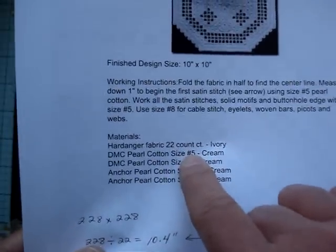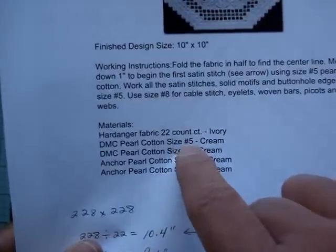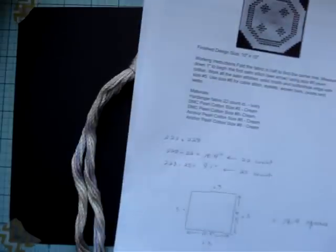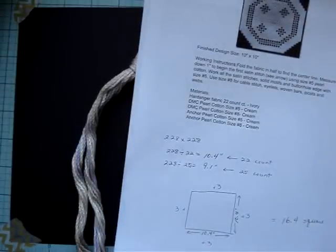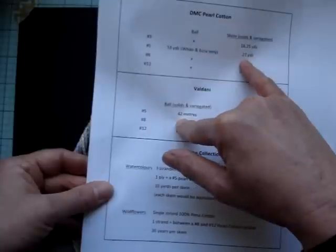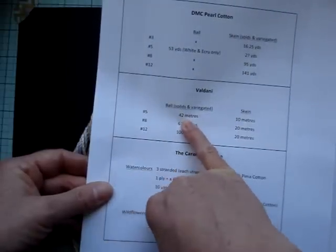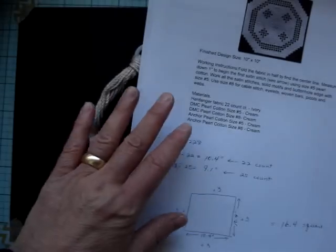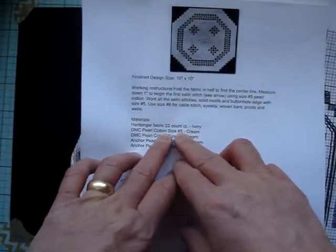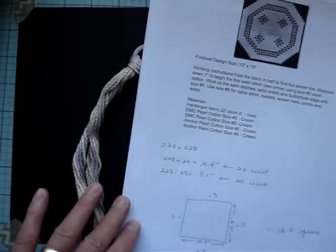If you're ordering, get a minimum of four skeins of the number five pearl cotton, or four skeins of the watercolors. If you're ordering the Valdani — the number five ball is 42 meters — I would say two balls of the Valdani will probably give you more than enough. These are just guidelines; I'm guessing because I haven't done this exact pattern, but I like to be on the safe side — order more.